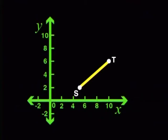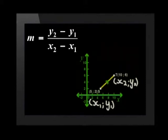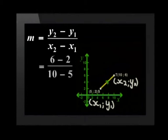Let's look at parallel lines first. I'm going to choose a line segment, copy it and translate it on the Cartesian plane. I will take line segment ST. The coordinates of S and T are (5, 2) and (10, 6) respectively. The gradient formula is y2 minus y1 all divided by x2 minus x1. So the gradient of ST will be 6 minus 2 all divided by 10 minus 5, which comes to 4 divided by 5.